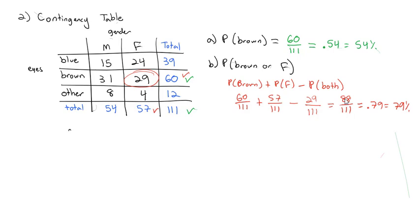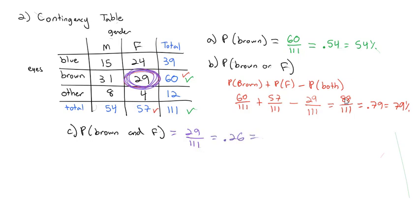Let's look at the and case — the probability of brown and female. What's nice about the contingency table is we can see where brown and female overlap: right in the middle with those 29 individuals. So 29 out of 111 people had both brown eyes and were female, which comes out to approximately 0.26, or 26%.